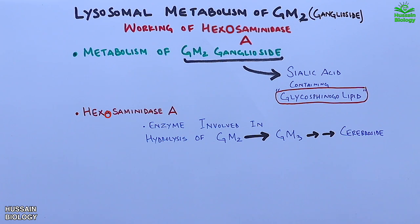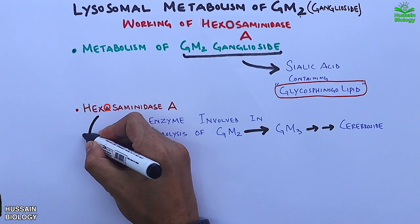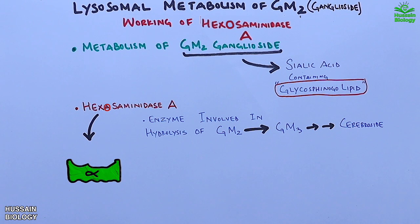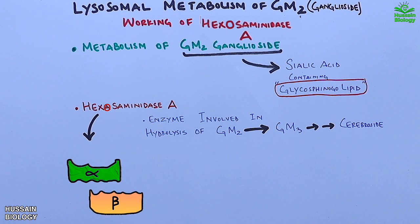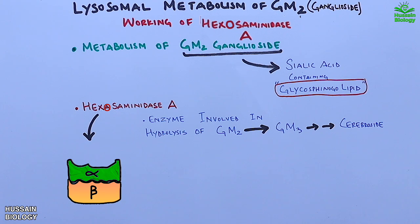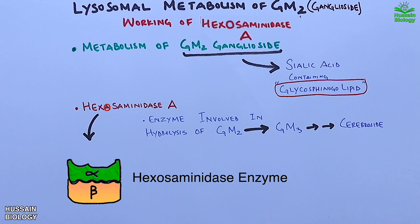Looking at the structure of hexosaminidase A enzyme, it is actually one part of the hexosaminidase enzyme. We have the hexosaminidase alpha subunit, as shown in the diagram, which makes up hexosaminidase A enzyme. Then we have the hexosaminidase beta subunit which makes up hexosaminidase B enzyme. Together these are known as the hexosaminidase enzyme. Here we are more concerned with hexosaminidase A, which drives GM2 metabolism.